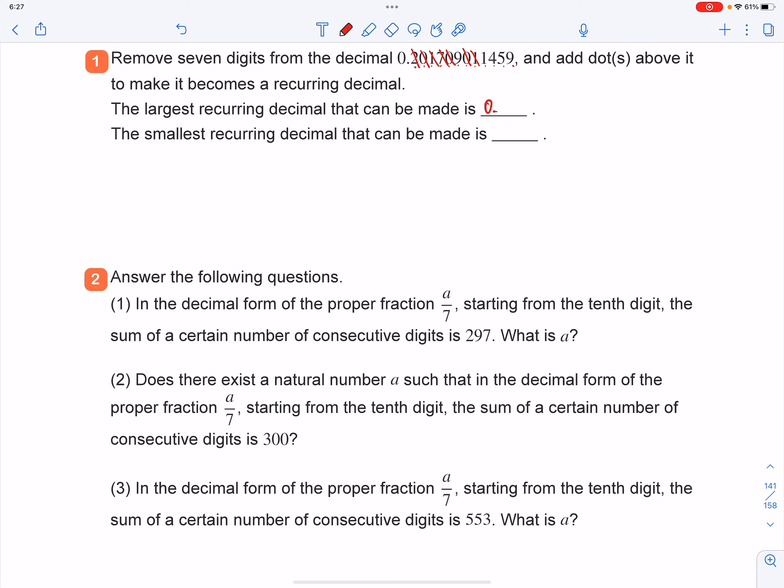So that becomes 0.91459. And how can I make that into a recurring decimal, which is the largest? I can just add one dot here, because that way, after this, I'll get a lot of nines, that'll be the biggest.